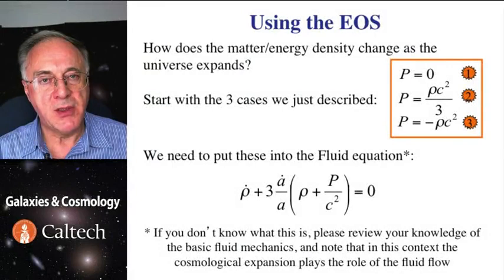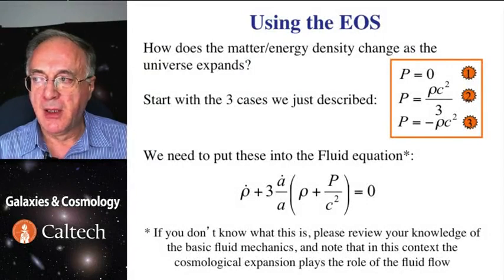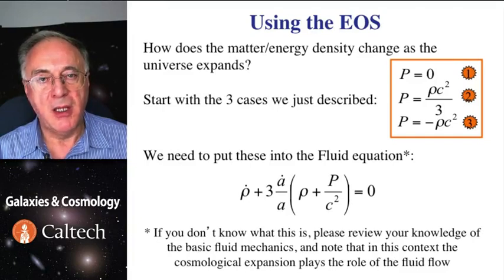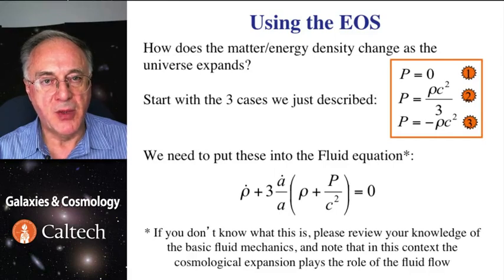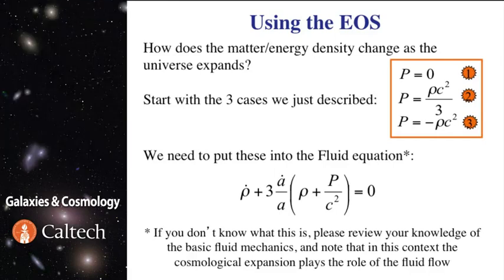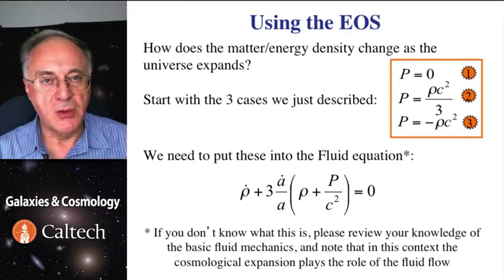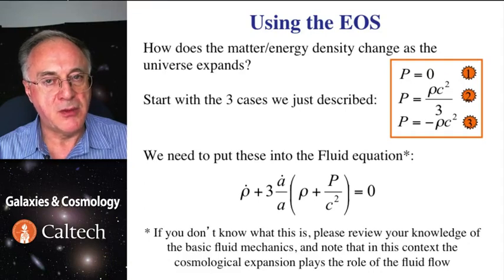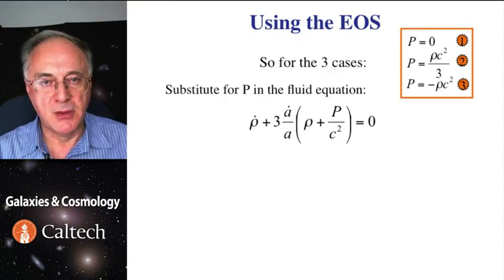Alright, so how does the density of the matter and energy change as the universe expands? Let's start with the three simple cases that we just introduced earlier: ordinary matter, radiation or relativistic matter, and a cosmological constant. I'll just number them one, two, three for convenience. So if we put those in the fluid equation, which is essentially a continuity equation, and hopefully you have encountered it when learning about fluid dynamics, but if not, we'll refresh that knowledge. So let's substitute the three expressions we've seen before in the fluid equation.